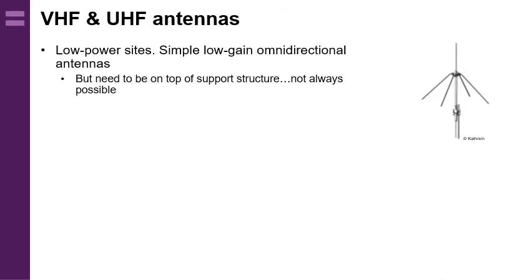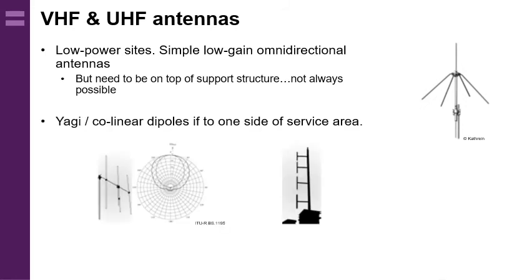The simplest way to provide coverage to a roughly circular service area is to place the transmitter in the middle and use an omnidirectional antenna. For a low-power service this works well with a simple low-gain omnidirectional antenna, but it must be on top of the support structure. This can be difficult if trying to get access to a telecoms tower where the top is likely to be cluttered with other users and is the most expensive place to install an antenna. More generally, it is quite likely that the transmitter site will be off to one side.